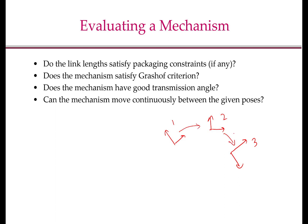The methods that we use just assume that the mechanism is at these three positions; there is no information that it will continuously move between them from one to two and two to three. If you design the mechanism based on those methods, many times the mechanism doesn't really work. The types of defects that can happen are called order defect, circuit defect, or branch defect. Order defect means that the order in which you visit the poses can change, but this only happens if you have more than three poses — with three poses, order defect never happens. In this lecture we will concentrate on circuit defect and branch defect.